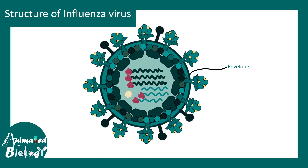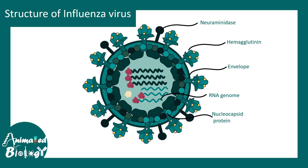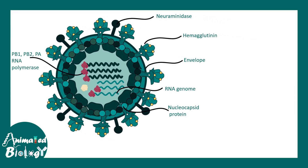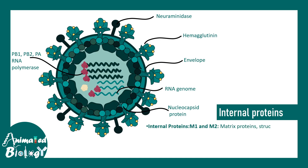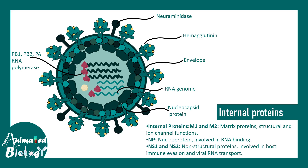The envelope is generally derived from the host cells. Hemagglutinin helps the virus attach to specific cell surface receptors. Neuraminidase helps release the virus from a newly infected cell. There are RNA genome segments, nucleocapsid proteins, matrix proteins, and many RNA polymerases used to make new proteins and replicate the genome. There are also internal proteins such as M1, M2 matrix protein, nucleoprotein NP, NS1, and NS2, all providing important functions.